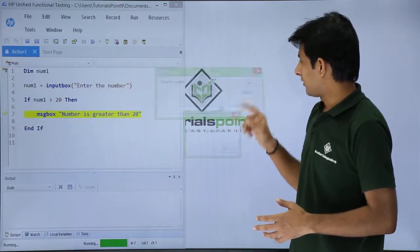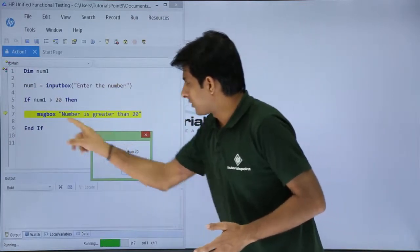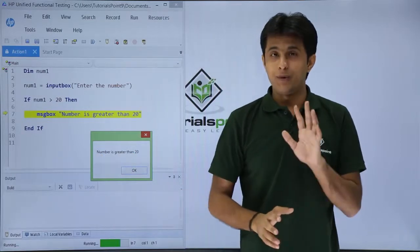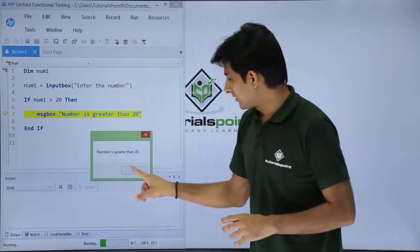I will click okay. If you observe, I have got this message box: 'Number is greater than 20'. That has been displayed. It is working fine. I will click okay.